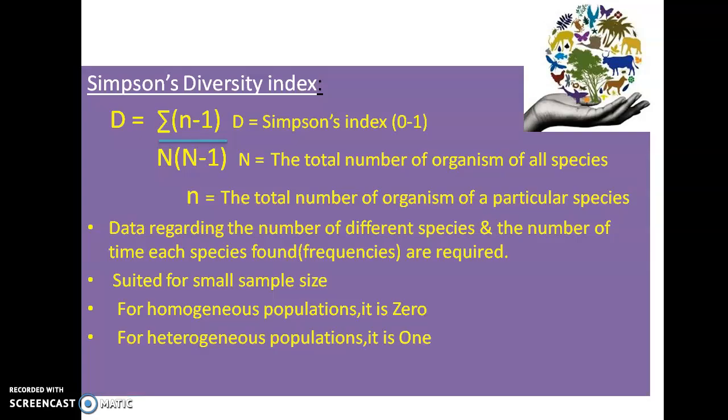How can we calculate? The Simpson diversity index can be calculated by this general formula: D = Σ n(n-1) / N(N-1), where D represents the Simpson index and it generally possesses two values, either 0 or 1. Capital N represents the total number of organisms of all species, while small n represents the total number of organisms of a particular species.